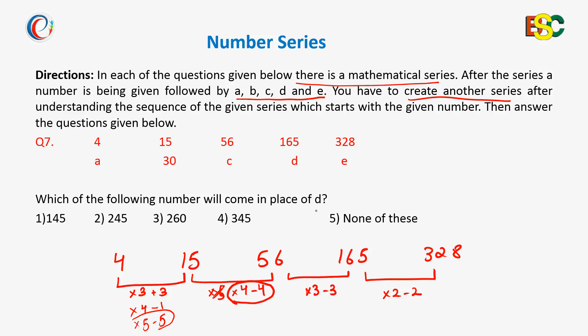Following this pattern we will find the value of D in this series. Here there is no need to find the value of A because we have to find D. So we will start from 30. Here it will be into 5 minus 5 but we will not do here. We will start with into 4 minus 4, that is 30 into 4, 120 minus 4 is 116.